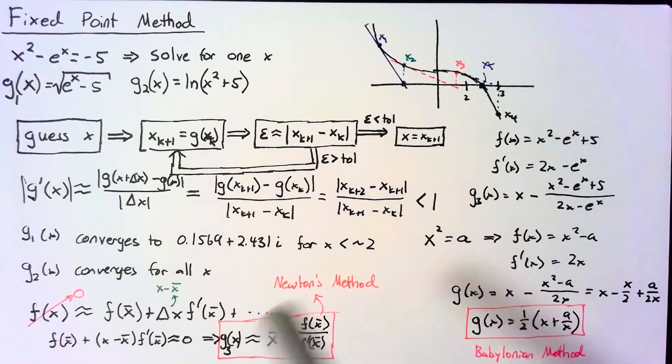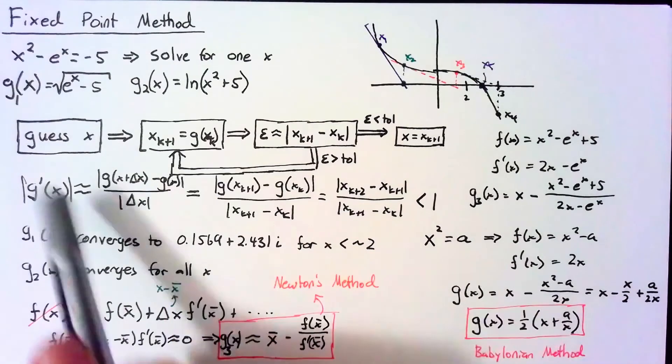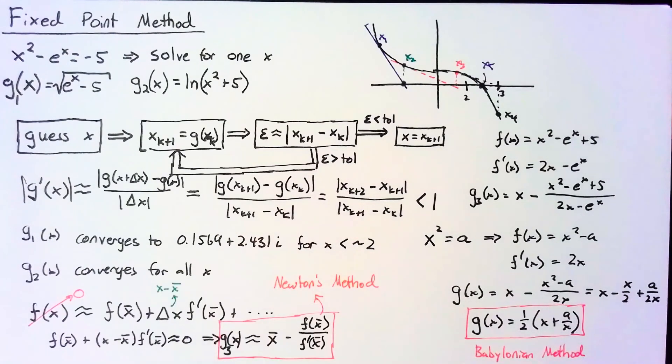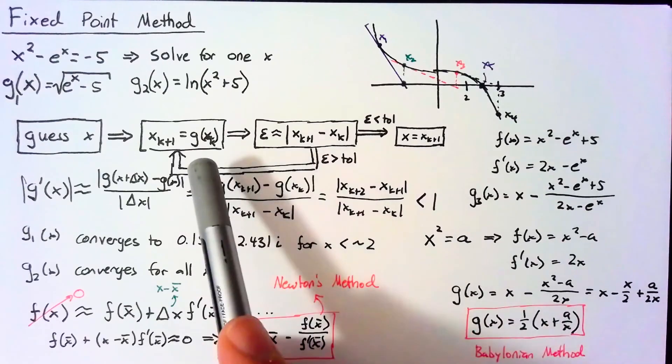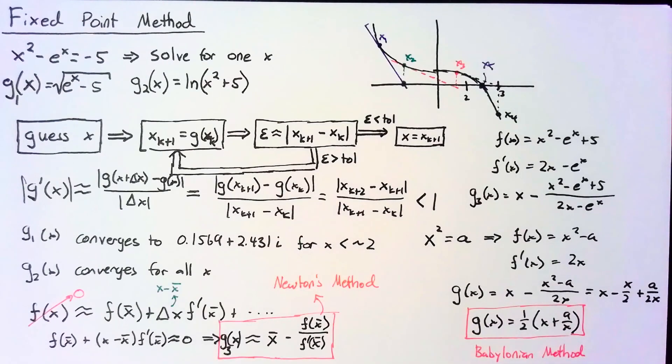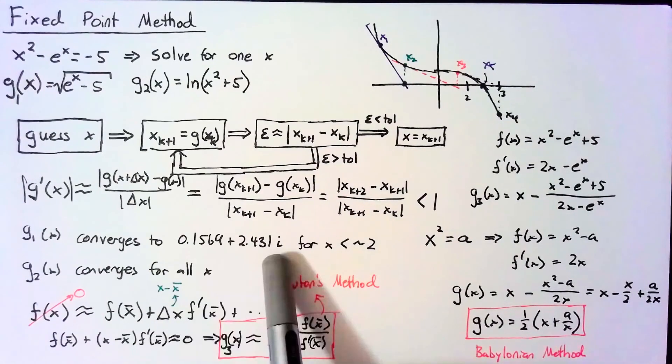So this isn't too bad to code up. The g values are the hardest things to write in. And all you need to do is just to loop through those g values over and over again until you either converge or blow up or go to some place you never expected.